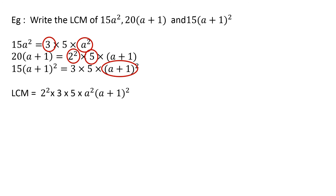That gives the final answer as 60a squared times (a plus 1) whole thing squared. This is how you find out the LCM of a given set of algebraic expressions. We'll move into some more examples to understand this further.